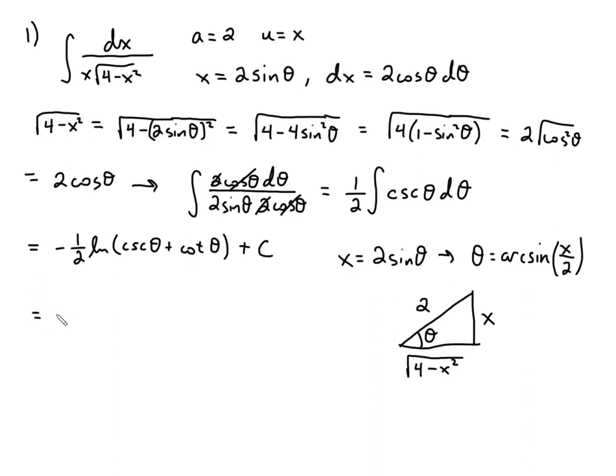Now we'll come back over here and realize, okay, now I can go ahead and start replacing these with what they are. Cosecant theta. How do you define cosecant in a triangle? Hypotenuse over opposite. So this gives you 2 over x. And cotangent is defined to be adjacent over opposite. So this is plus the square root of 4 minus x squared over x. And then finally you can notice that these are both over x, so you can put them together for your final answer of negative 1 half natural log of 2 plus the square root of 4 minus x squared over x.